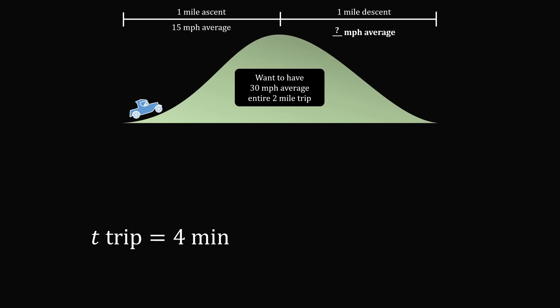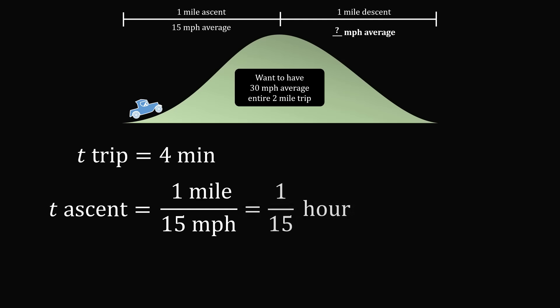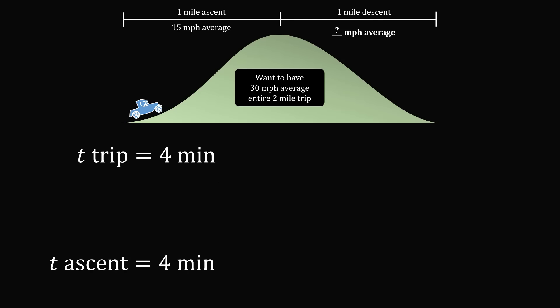So, now let's calculate the time it takes just for the ascent. This time will be equal to the 1 mile distance divided by the 15 miles per hour speed. This works out to be 1 over 15th of an hour. As there are 60 minutes in an hour, this works out to be 4 minutes for the ascent. But now, let's take a look at these facts. We need the entire trip to take 4 minutes, but we have already used 4 minutes for the ascent. So, the only way this will be possible is if the descent takes 0 minutes.